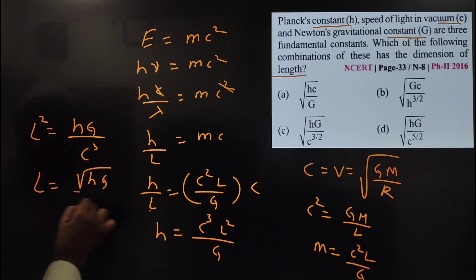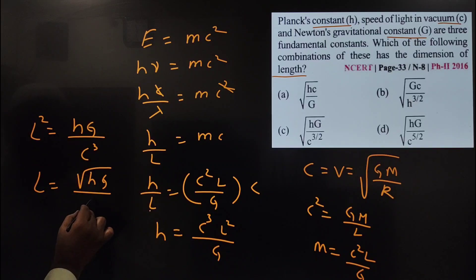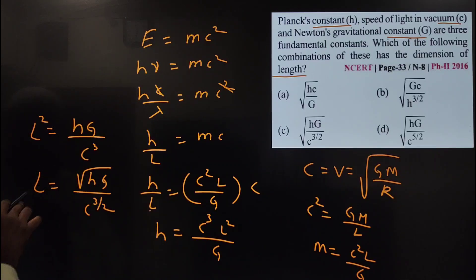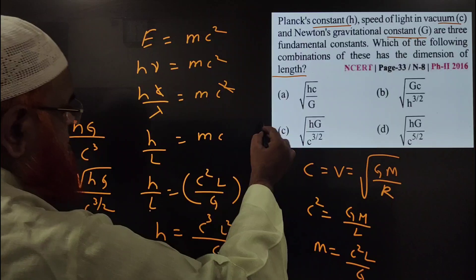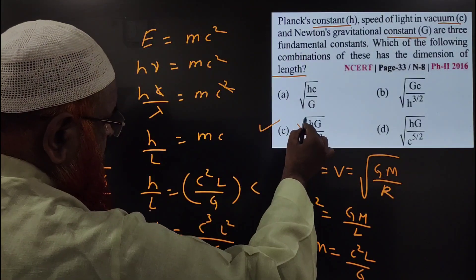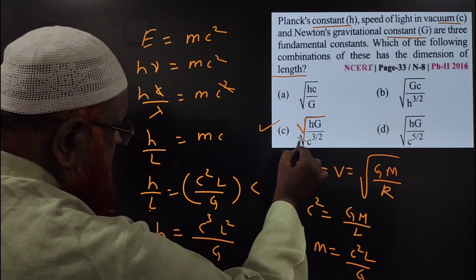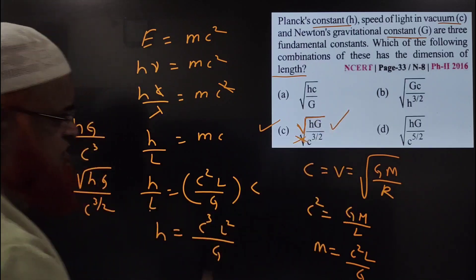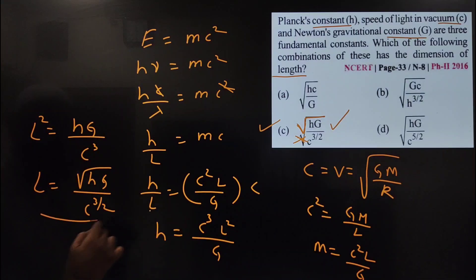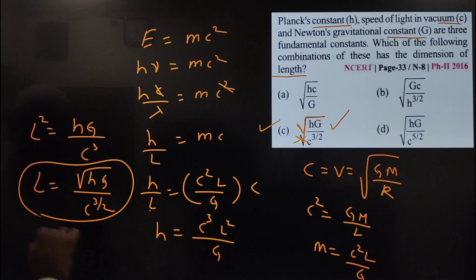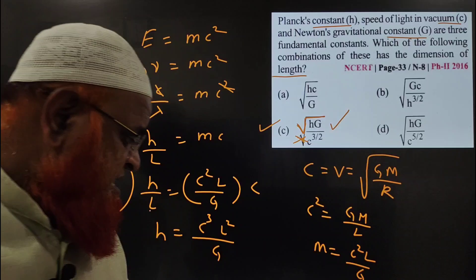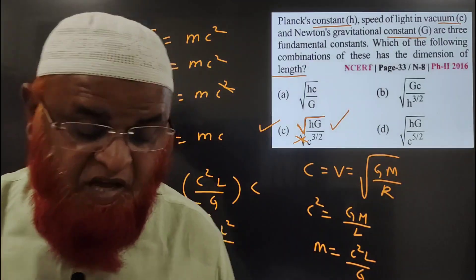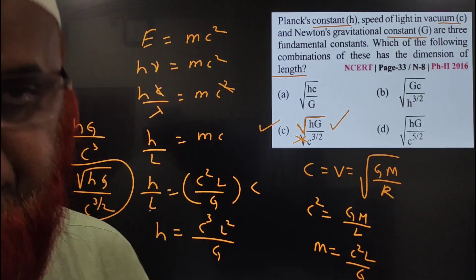So L equals root of H·G divided by C³, which can be written as (H·G)^(1/2) divided by C^(3/2). The square root applies only to the numerator, not the denominator. So option C is correct: H·G by C^(3/2) is your correct answer. Hope you have enjoyed this different style of solving the problem. Thank you.